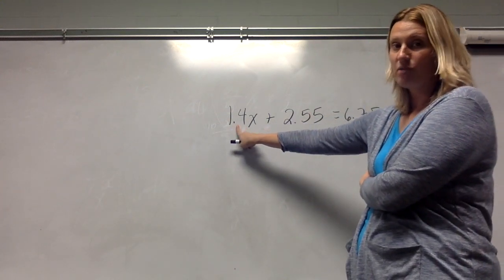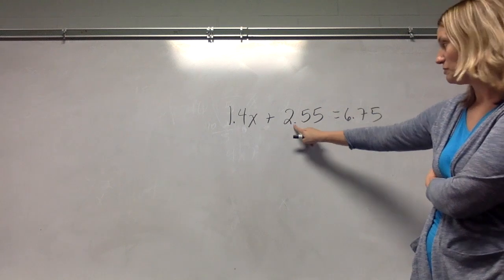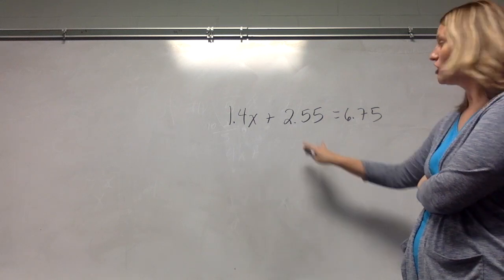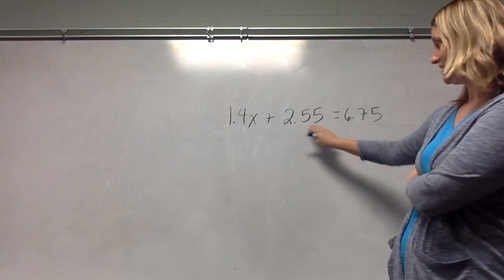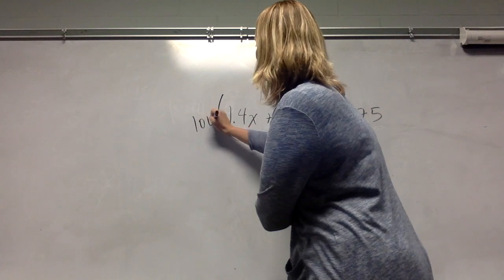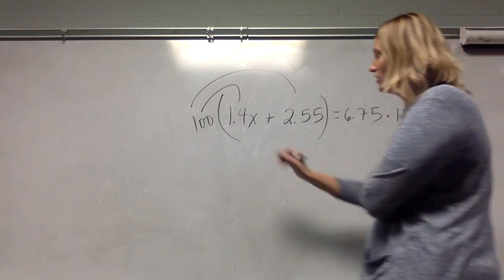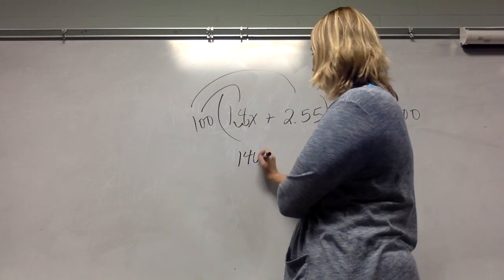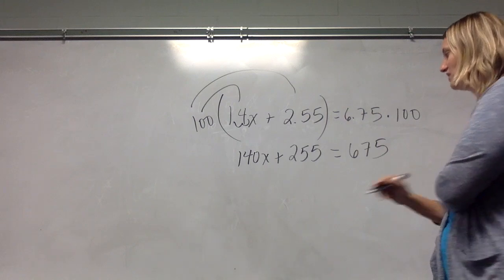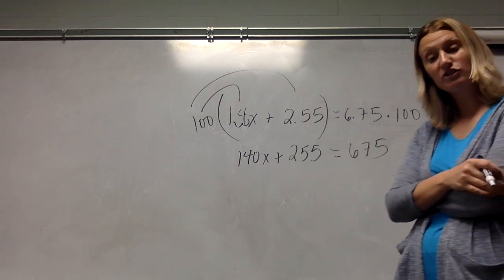Because this is only in the tenths place, multiplying by 10 would move that decimal over one and give me 14. It would give me a whole number. However, multiplying by 10, moving that decimal over one would still give me a decimal here and a decimal here. So, you want to look at your biggest decimal or out to the furthest place. These go out to hundredths. So, what I want to multiply by is 100. And distribute that through. And, of course, balance my scale and multiply by 100 there. So, multiplying by 100 is moving it twice. So, that becomes 140x. That becomes 255. And that is 675. Now, I can subtract, divide by 140, and I can move on without ever having to work with the decimals.